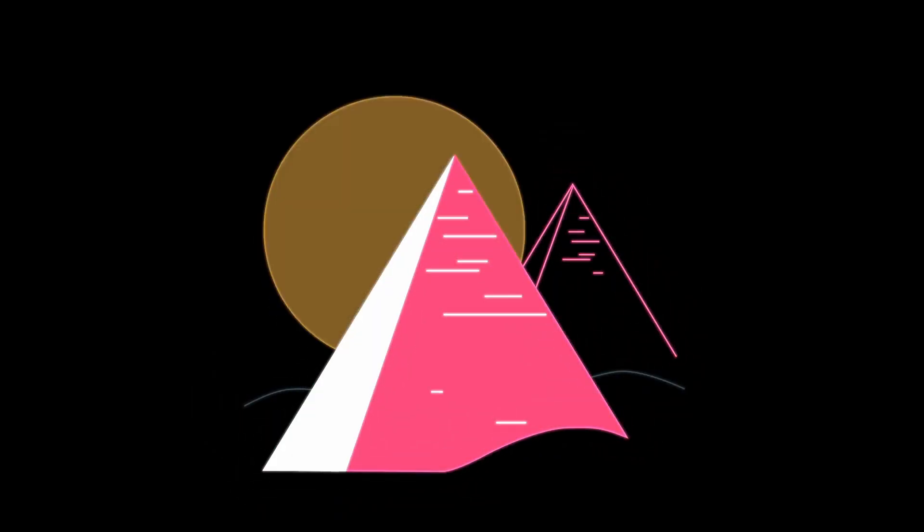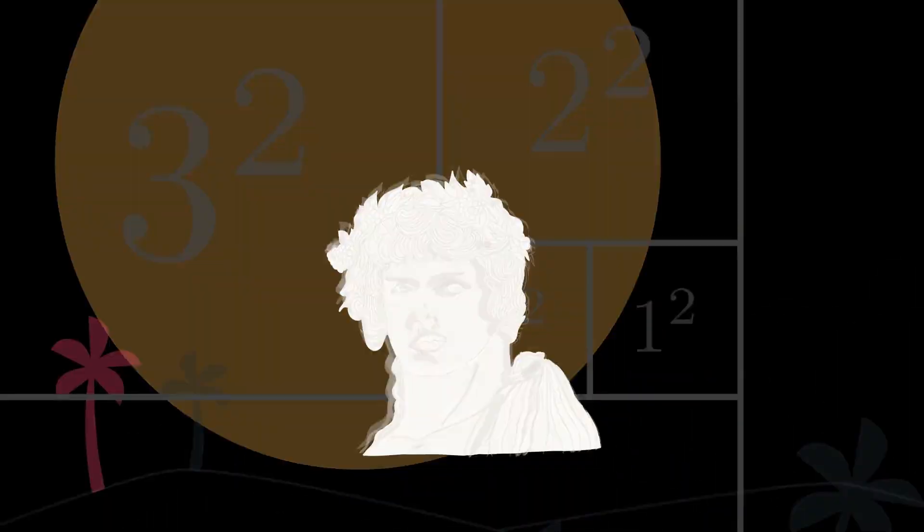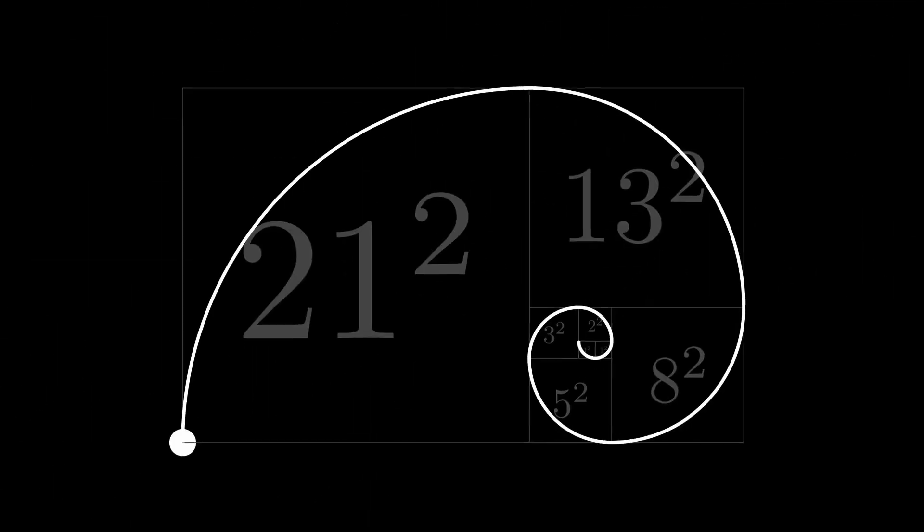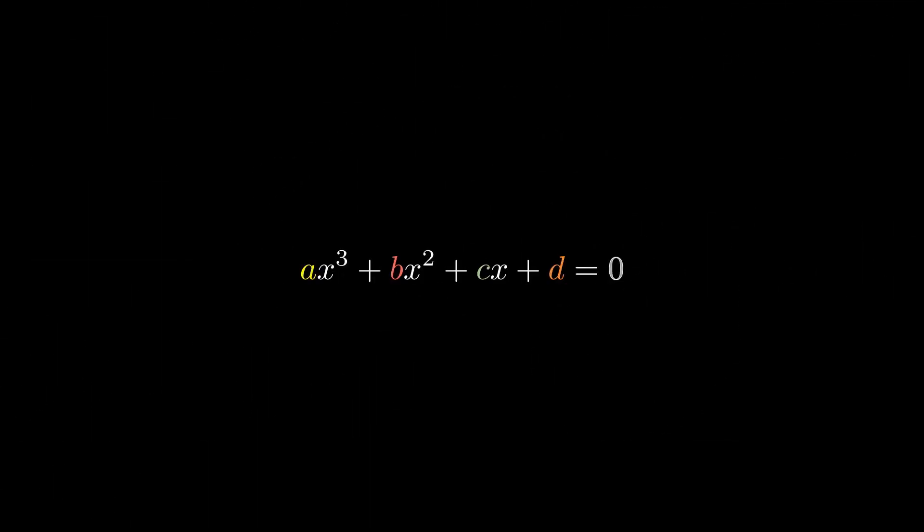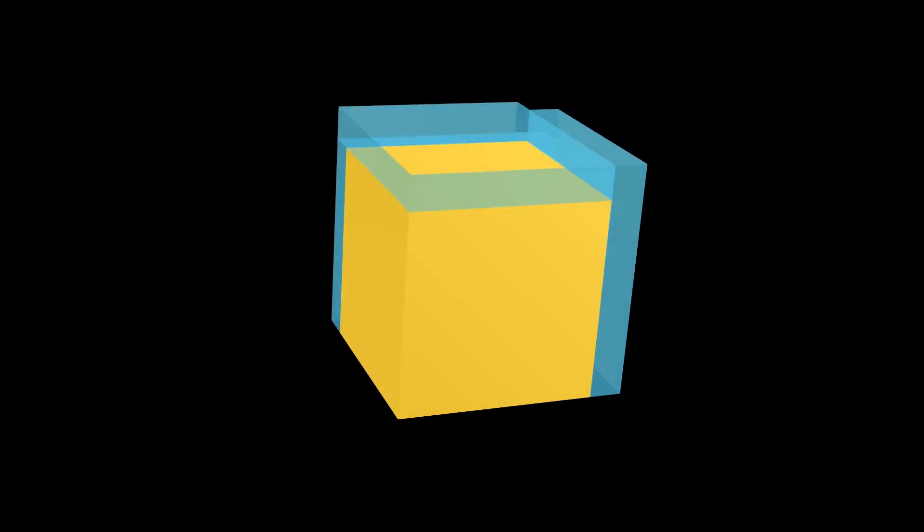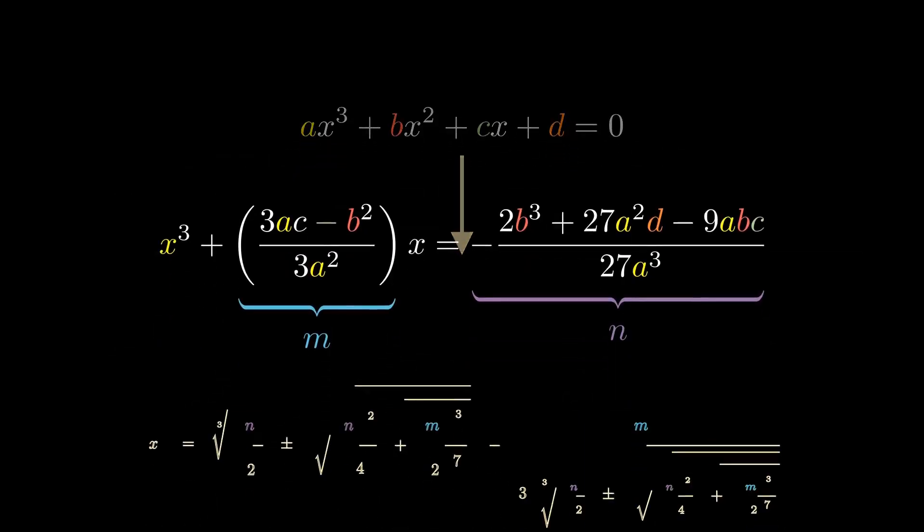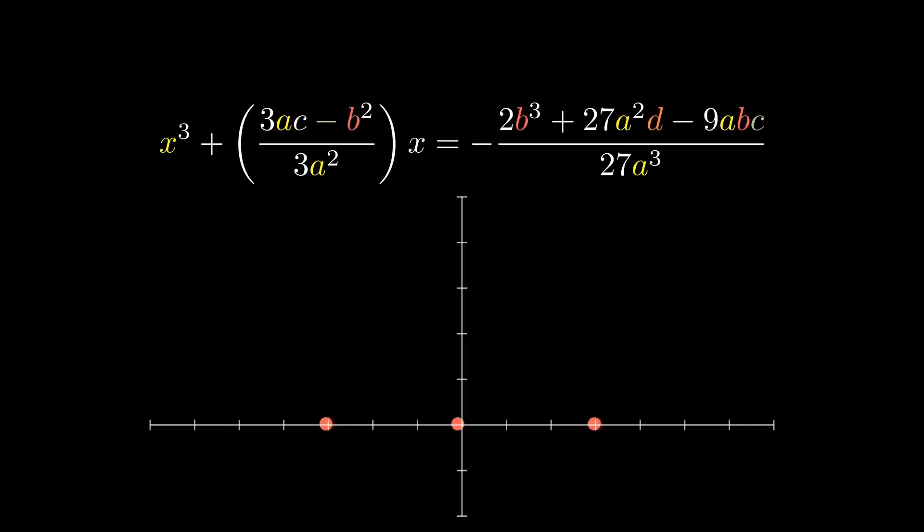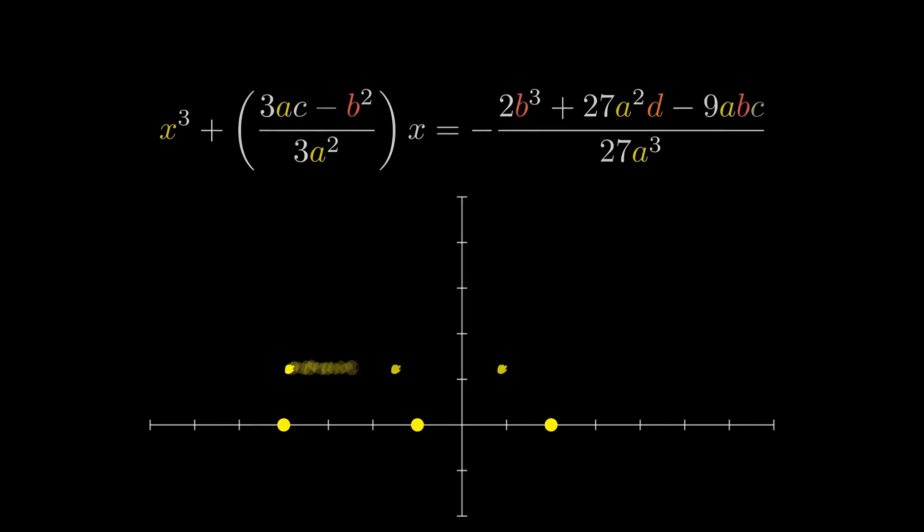Imagine a math problem so challenging it stumped the ancient Egyptians, the Greeks, and even Fibonacci. The cubic equation was the ultimate puzzle, cracked by Delferro and later published by Cardano in the 16th century. Let's visualize the groundbreaking solution that had puzzled mathematicians for millennia.